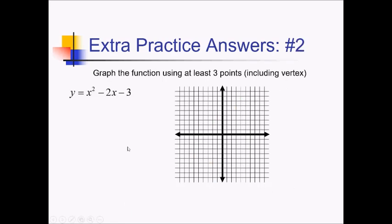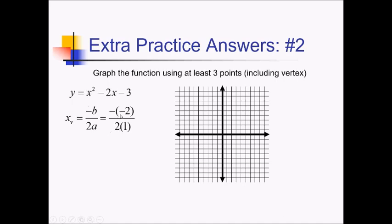To graph this parabola in standard form, we're going to use negative b over 2a to find the x-value of the vertex. So that's going to be negative, negative 2, over 2 times an a-value of 1. That's going to be 2 over 2, which is just 1. So that's the x-value of the vertex.